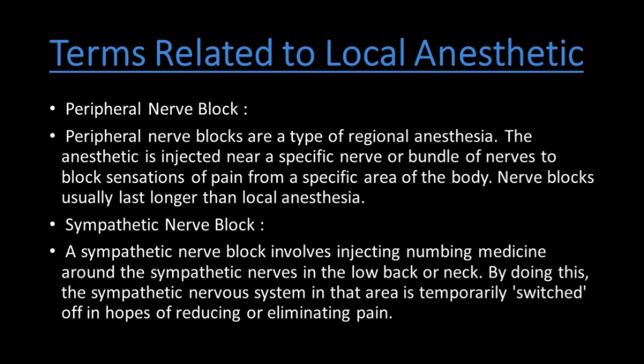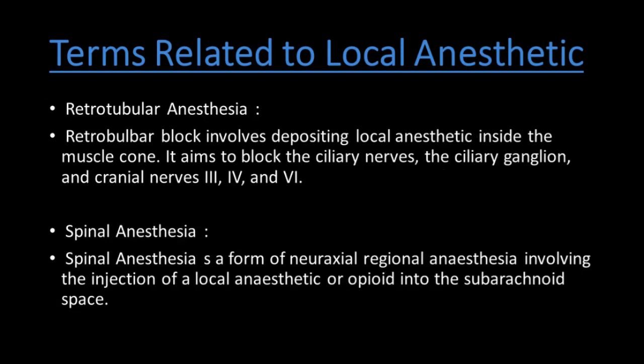Sympathetic nerve block involves injecting numbing medicine around the sympathetic nerve in the lower back or neck, temporarily switching off the sympathetic nervous system in the area in hopes of reducing or eliminating pain. Retrobulbar anesthesia involves depositing local anesthetic inside the muscle cone, aiming to block the ciliary nerve, ciliary ganglion, and cranial nerves three, four, and six.